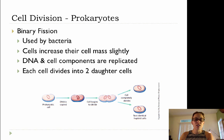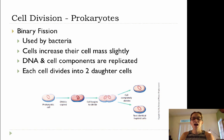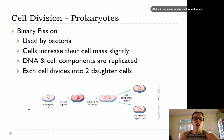The cell increases in size slightly, the DNA is replicated, the other cellular components are replicated as well, and then each cell divides into two daughter cells. So at the end of binary fission, we start out with our prokaryotic cell,